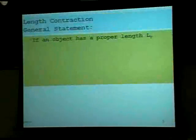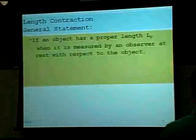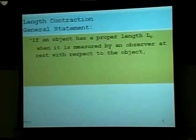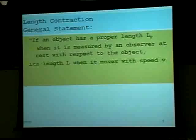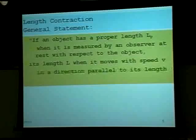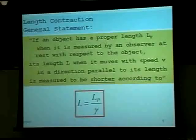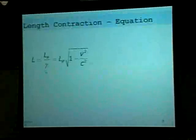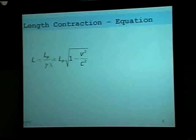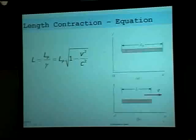Here's a general statement: when an object has a proper length L sub P, as measured by the observer at rest with respect to the object, its length L when it moves with speed V in a direction parallel to its length is measured to be shorter according to this equation: L equals proper length divided by gamma. The measured length of the moving observer is L equals L sub P divided by gamma, where one over gamma is equal to the square root of 1 minus velocity over the speed of light squared. So if this were the proper length in the rest frame, this would be the contracted length in the moving frame.